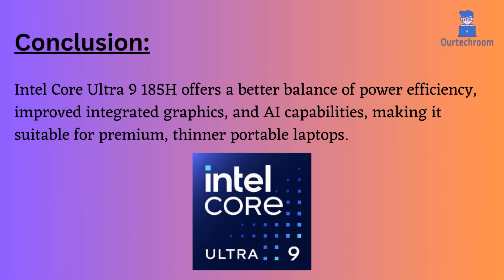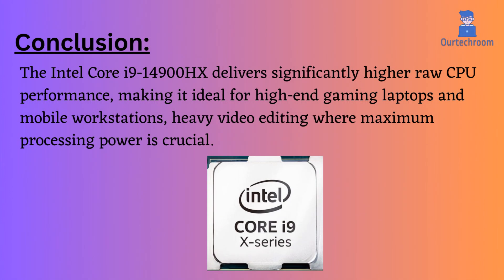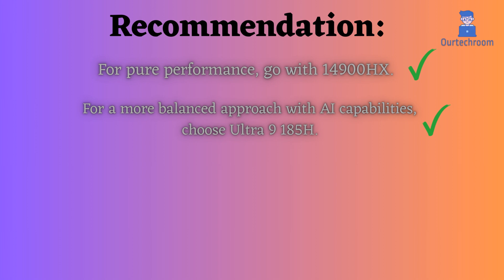In conclusion, the Intel Core Ultra 9 185H offers a better balance of power efficiency, improved integrated graphics, and AI capabilities, making it suitable for premium, thinner portable laptops. The Intel Core i9-14900HX delivers significantly higher raw CPU performance, making it ideal for high-end gaming laptops, mobile workstations, and heavy video editing where maximum processing power is crucial. For pure performance, go with the 14900HX; for a more balanced approach with AI capabilities, choose the Ultra 9 185H.